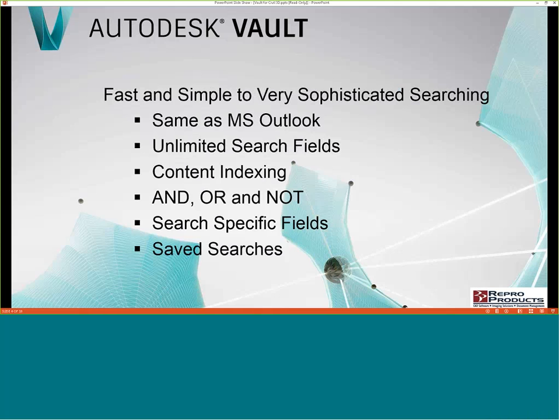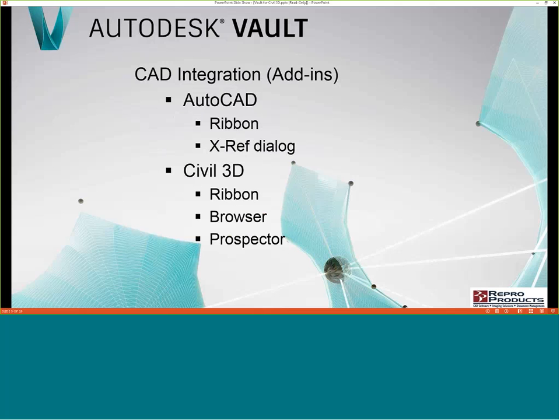Searching capabilities in Vault are just like in Outlook — you have a field where you type something and it searches all the properties and the content of the files. You can do boolean searches, specify certain fields to search, and create saved searches — like 'show me all the drawings I have checked out' or 'show me all drawings that are in a work-in-progress state' — that can be saved and retrieved very quickly.